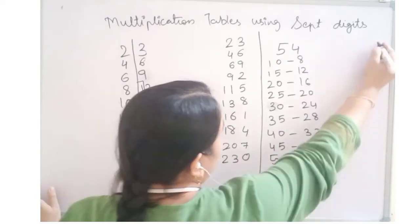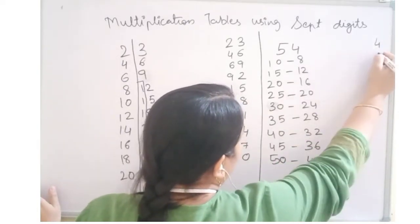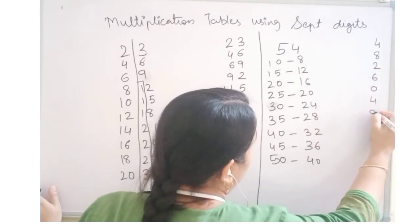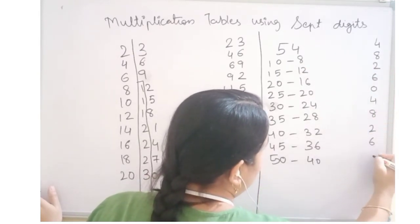Right hand side single digit, we will write as it is. 4, 8, 2, 6, 0, 4, 8, 2, 6 and 0.